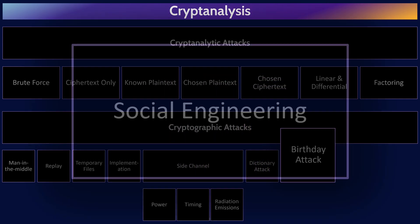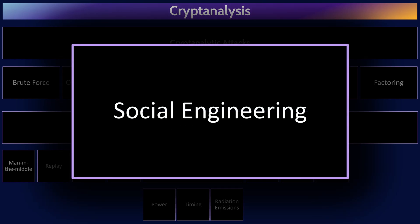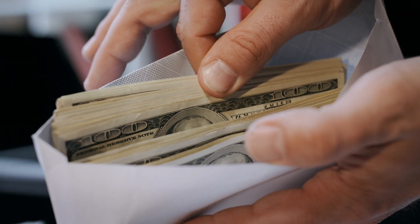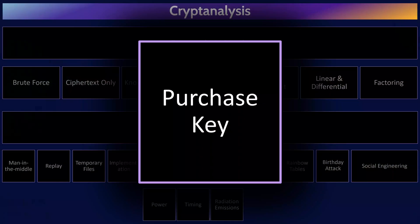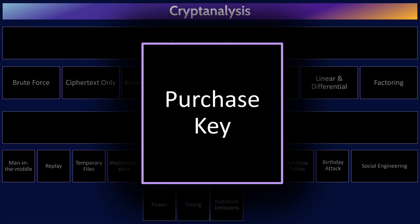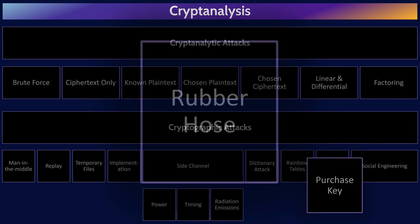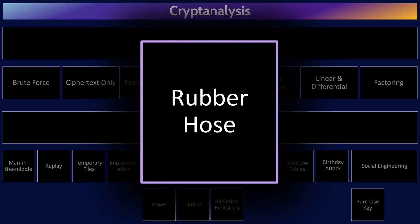The final way of attacking a cryptosystem is by targeting the weakest link in any system: people. Often the easiest way to figure out some super-secure key is to bribe someone—thus the purchase key attack. Or if the carrot approach doesn't work, move on to the stick and torture someone. This is rubber hose cryptanalysis: you torture someone to get the encryption key.